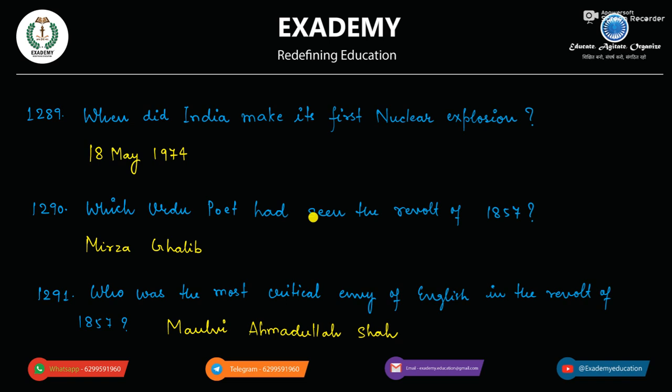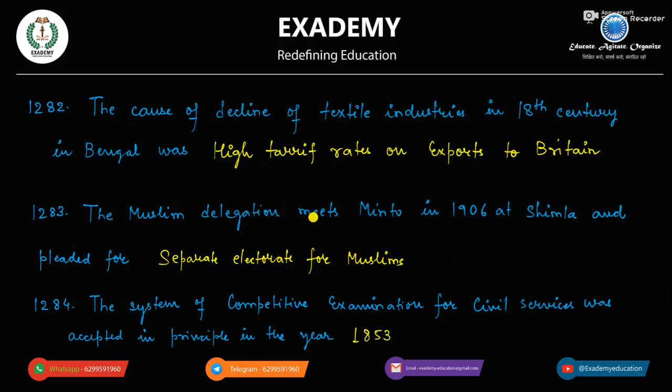Who was the most critical enemy of the English in the revolt of 1857? Us mein sabse zyada critical enemy English ke against mein kaun tha? Maulvi Ahmadullah Shah.